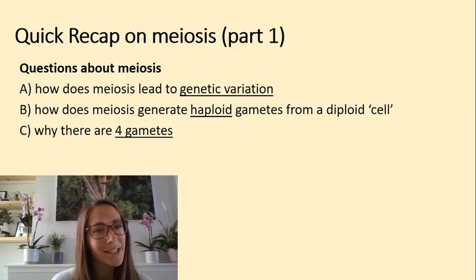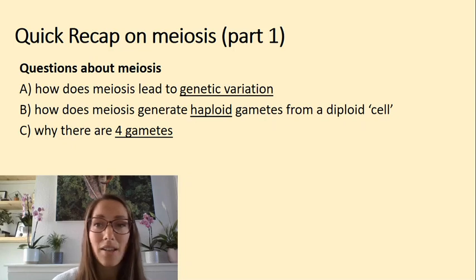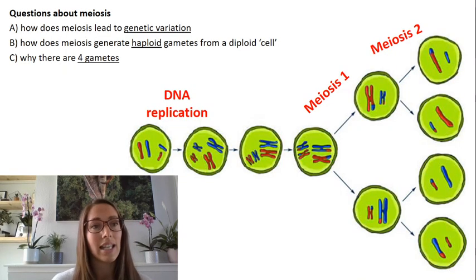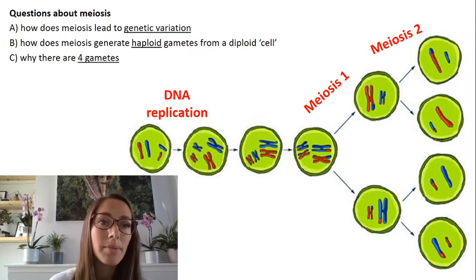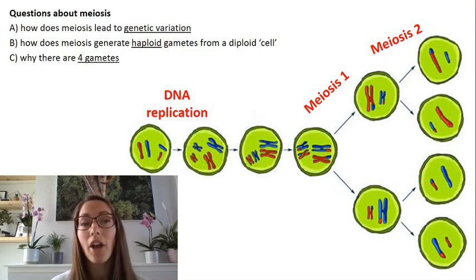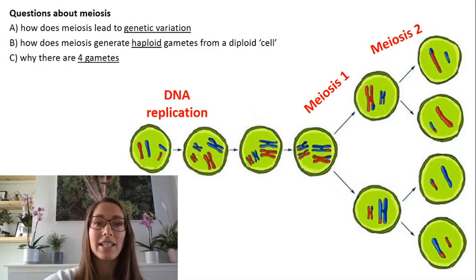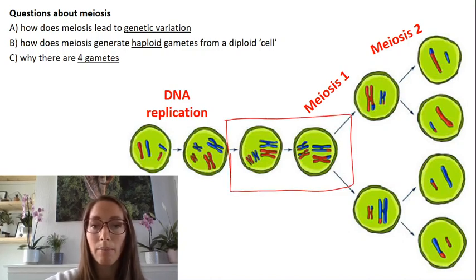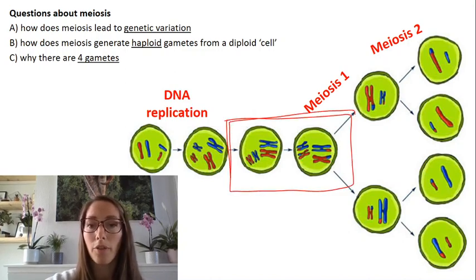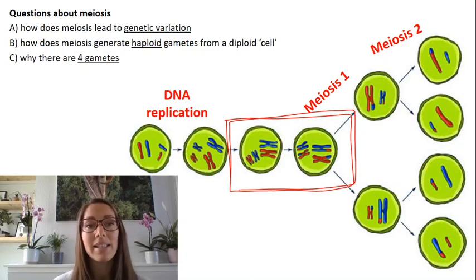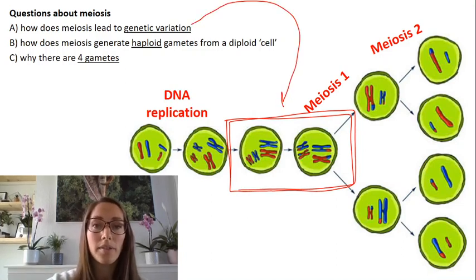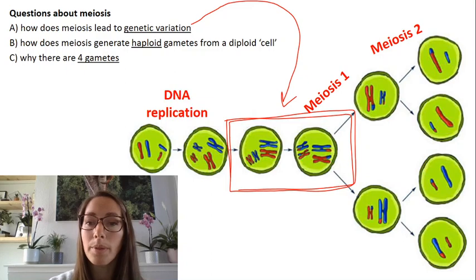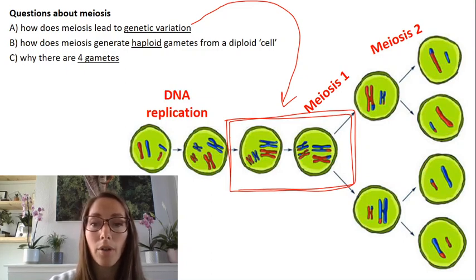Some of your questions on the spermatogenesis activity were these, so let's talk through them together. The first one: how does meiosis lead to genetic variation? Genetic variation in meiosis is a result of two things. The first one is crossing over, which happens in prophase one of meiosis one. This is basically where lengths of DNA are swapped between homologous chromosomes.